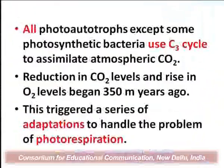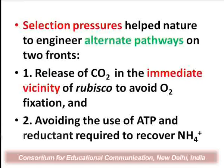There was a gradual reduction in carbon dioxide levels and a rise in oxygen levels that began then. This oxygen revolution triggered a series of adaptations which were now necessary to handle the problem of photorespiration, because photorespiration was really robbing the plant of its valuable carbon. These selection pressures actually helped nature to engineer, to modify, to manipulate different types of alternate pathways.